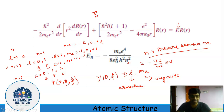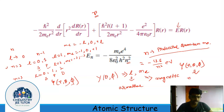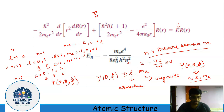We can see that the wave function ψ(r, θ, φ), from the solution of the Schrödinger equation, depends on three numbers: n, L, and M_L. These three numbers are called quantum numbers. But what is the physical significance of them? Why should we believe that our solution depends on these three quantum numbers? To understand this, we will look at some experimental facts.